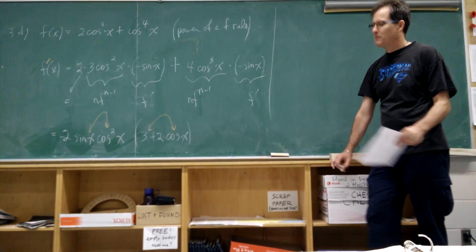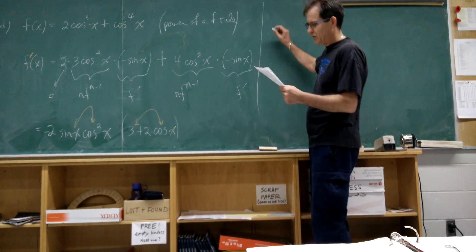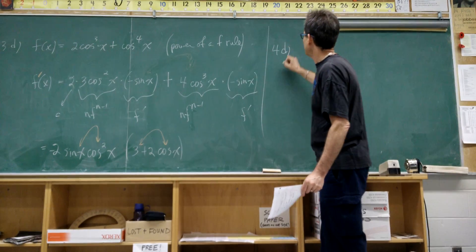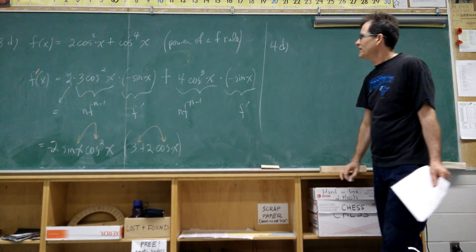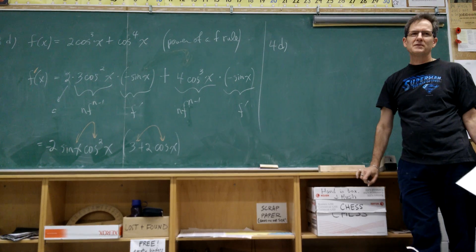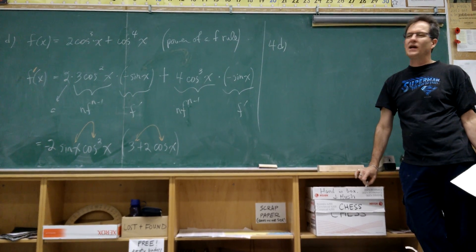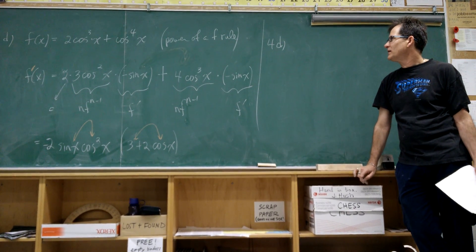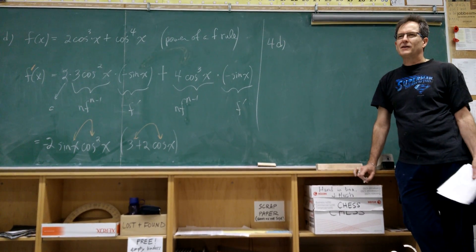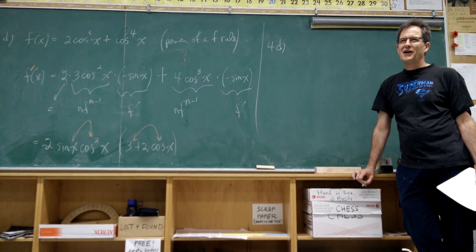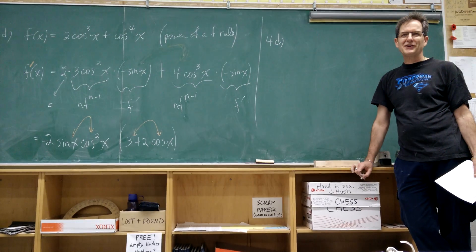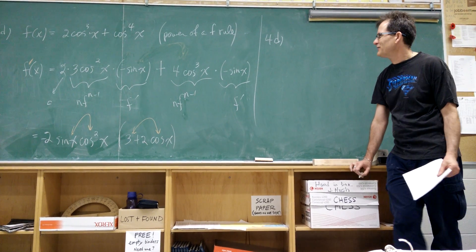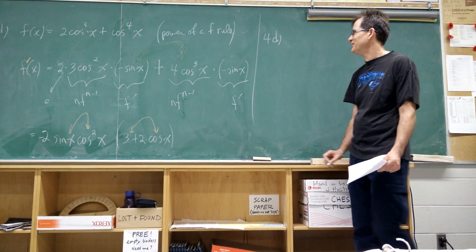The next example is number 4D. This is perhaps the most complicated of the examples we're going to do, so we're going to call this the chain rule massacre for obvious reasons.